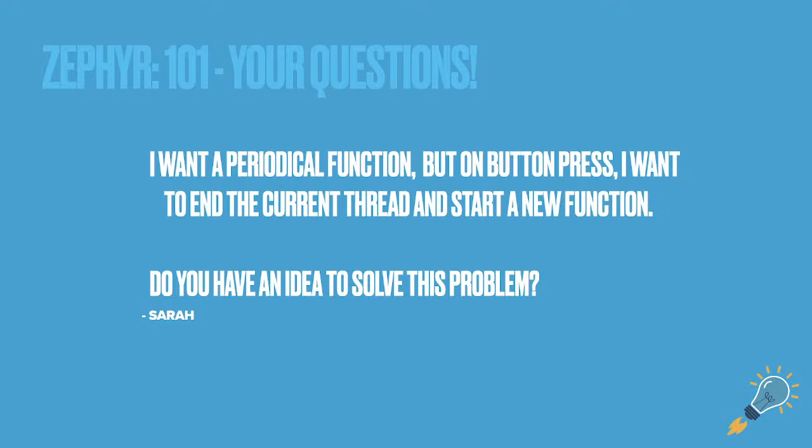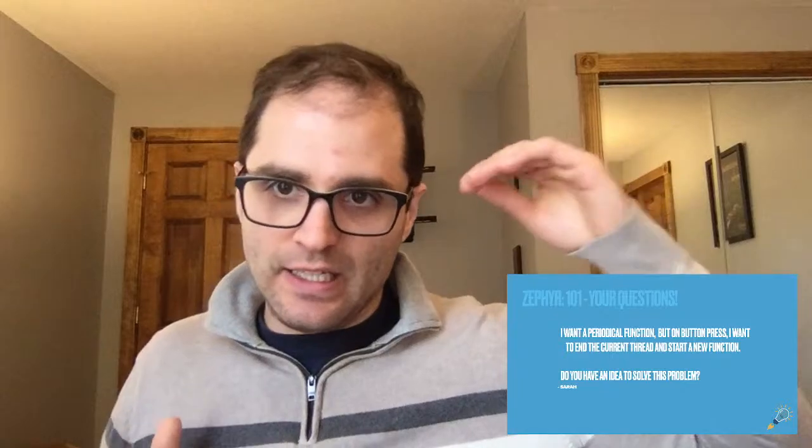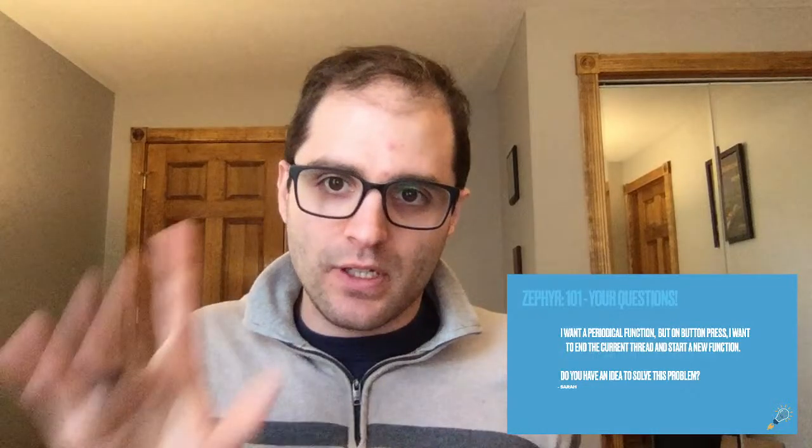The next question is from Sarah. She wanted a periodic function triggered on a button press — essentially to kill the current thread and start a new function. It sounded like she was using the system work queue with a persistent running task, and wanted to kill it on a button press and run something else. That's not quite what the system work queue is for — those tasks need to eventually end on their own.